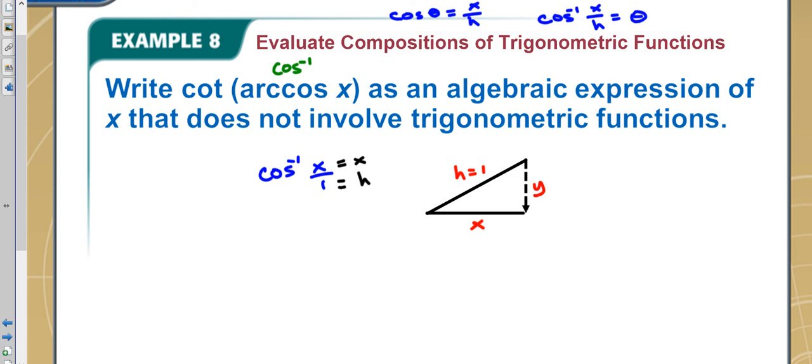Now if I wanted to solve for y, what would I do? I'd use Pythagorean theorem: x squared plus y squared equals 1 squared, because that's my h.